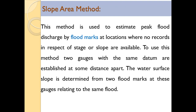In cases where the area-velocity method and other methods cannot be applied, the slope area method can be used effectively for measurement of discharge. The prerequisite is that flood marks should be available. Two gauges with the same datum are established at some distance apart, and the water surface slope is determined from two flood marks at these gauges relating to the same flood.